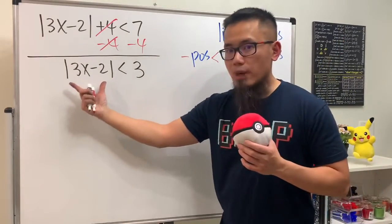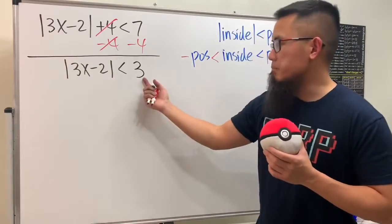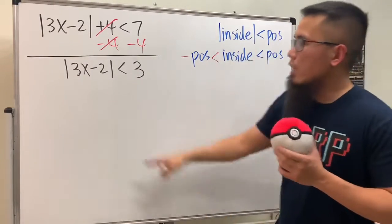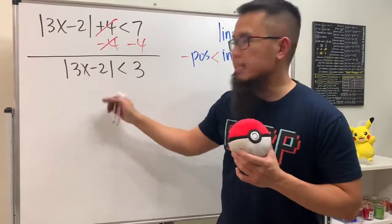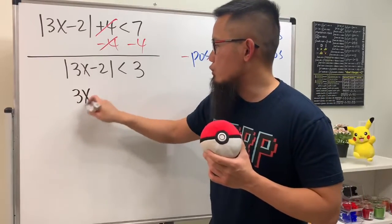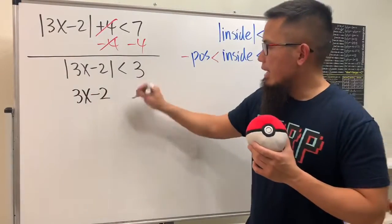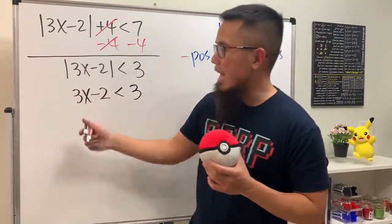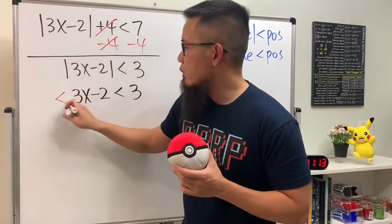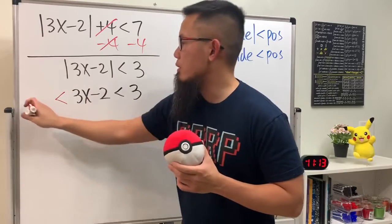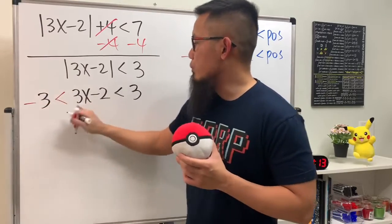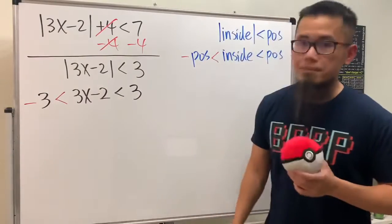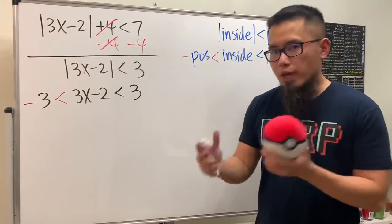Now you see absolute value of an expression is less than a positive number, so we can proceed. I'm going to put down the inside expression in the middle, so 3x minus 2, and the less than 3 stays the same. But we go to the left-hand side and put this in between negative 3 and positive 3, using the same inequality.